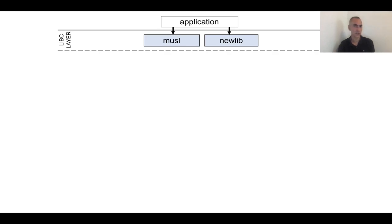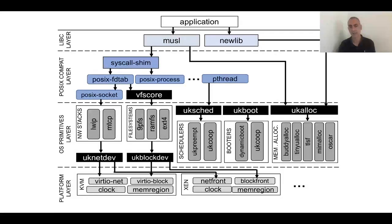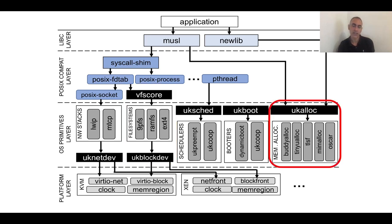Here's an architectural diagram of Unikraft. You have the application on top. Underneath, you can plug into either Musl or NewLib, the libcs that we support, and then there's a POSIX compatibility layer. Under all of that is the core of Unikraft, and the black boxes are those specialized APIs. For instance, if you're concerned about network performance, you could code against our uk-netdev high performance API. If you're interested in retrieving static files very quickly, you could bypass the VFS layer and code directly against uk-blkdev with a specialized file system. Unikraft also allows you to plug in different memory allocators — even multiple at the same time.